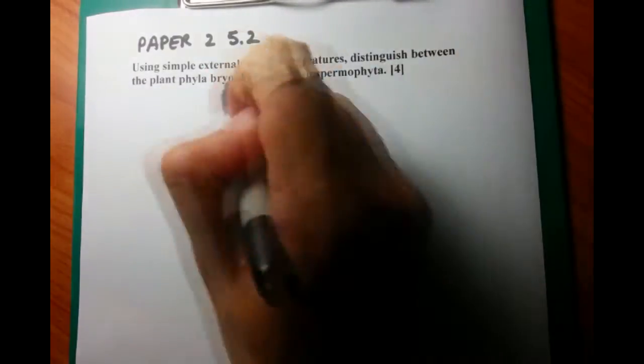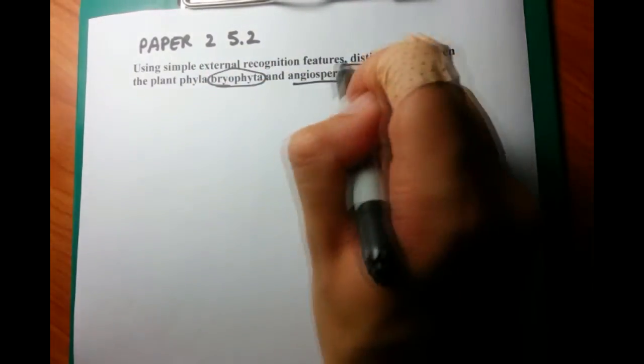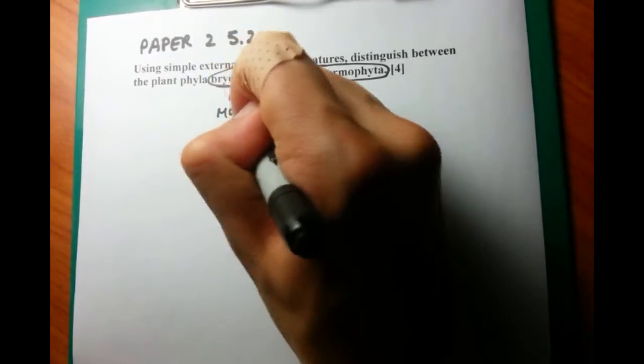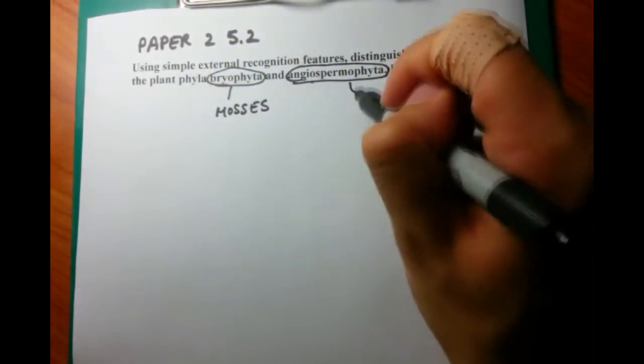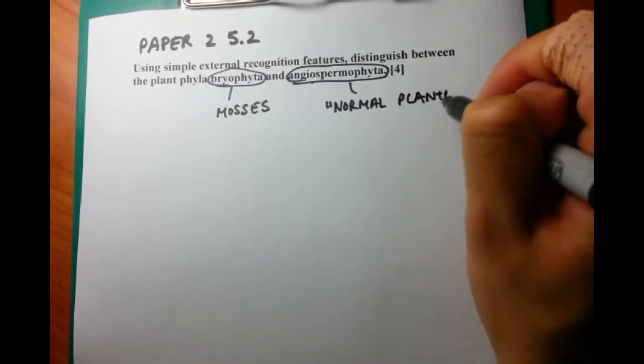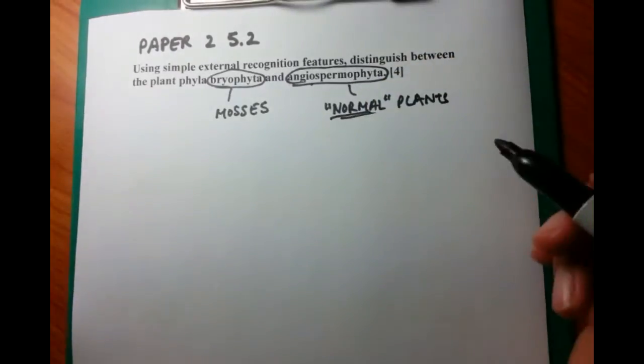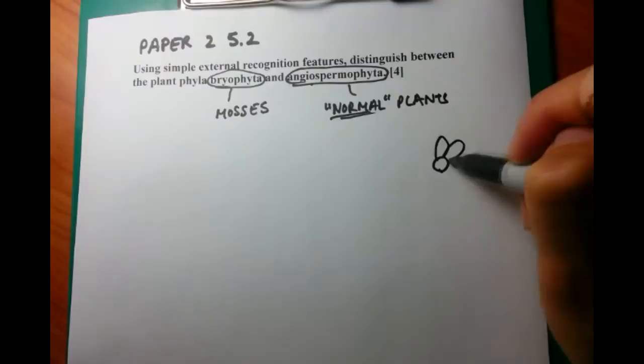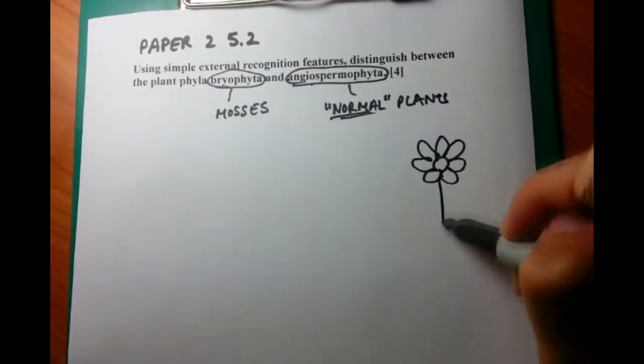Using simple external recognition features, distinguish between the plant phyla Bryophyta and Angiospermophyta. This question has been done previously by myself, except we did it in more complex and in-depth detail.